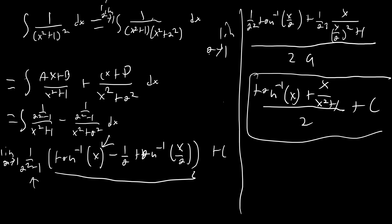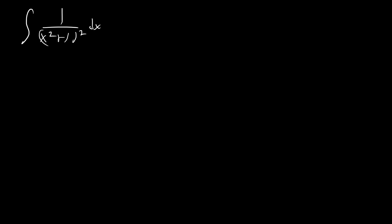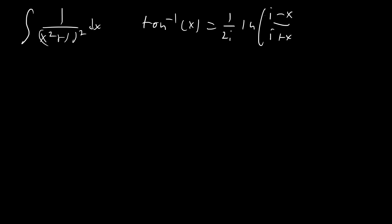That was pretty straightforward. Now let's look at the complex number method. In this case we're going to be doing partial fractions using complex numbers. It's easy to show that arctan(x) equals 1/(2i) · ln((i − x)/(i + x)), and that's the definition we're going to use for arctan here — it works for real numbers at least. Let's go ahead and factor the denominator.